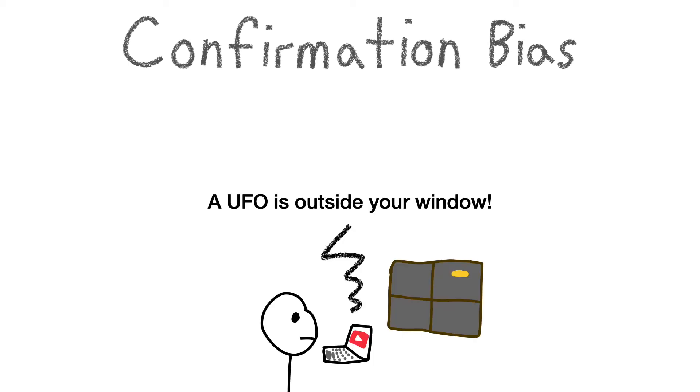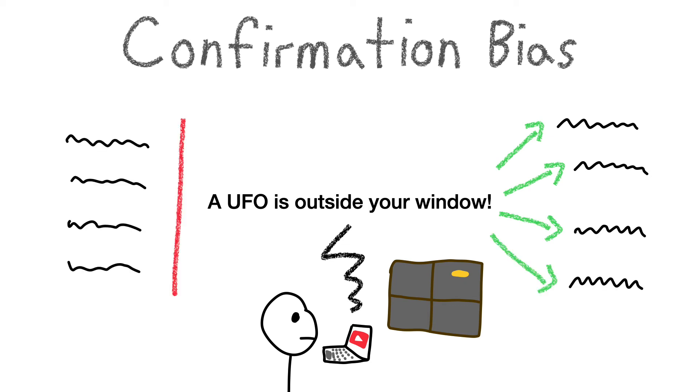Confirmation bias is a popular one that you might have heard before. This is a phenomenon where people have a hypothesis, assume it's true, and then test it with various types of evidence. Of course, when you assume your hypothesis is true, you will only focus on the data that confirms your hypothesis and ignore all the data that disproves it.